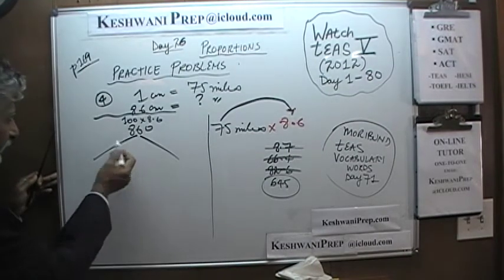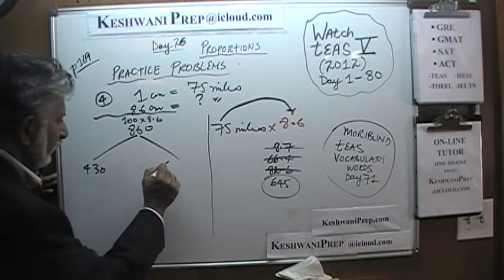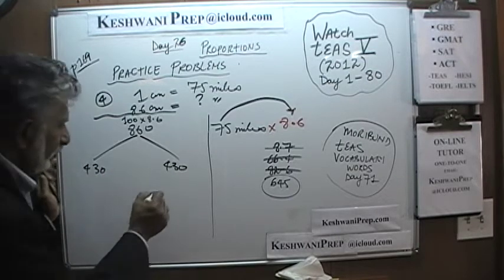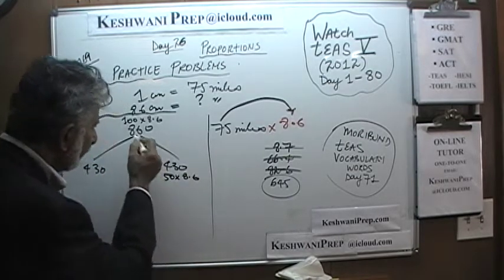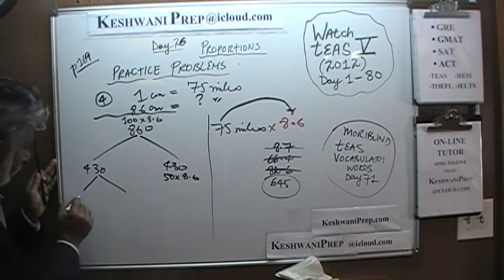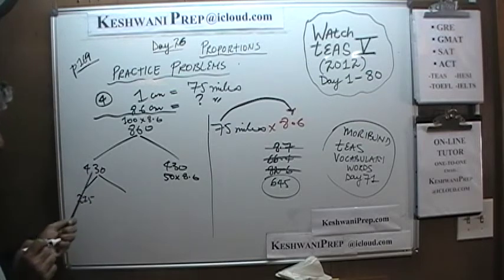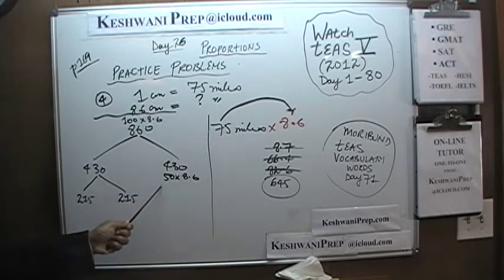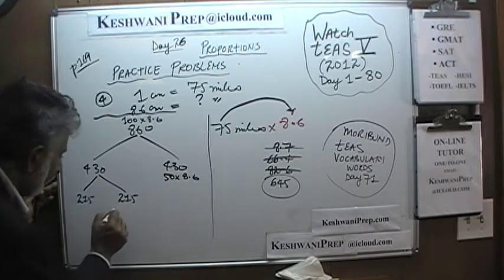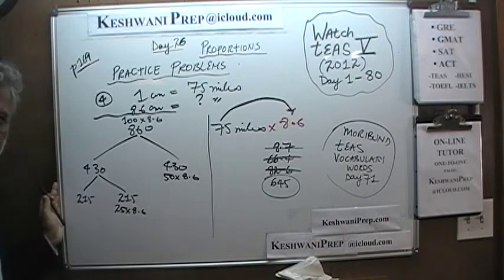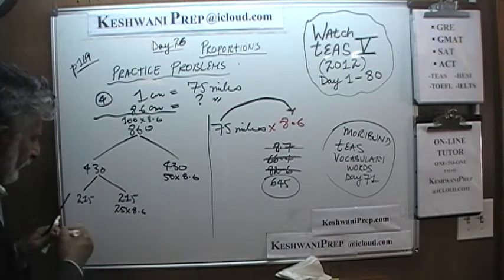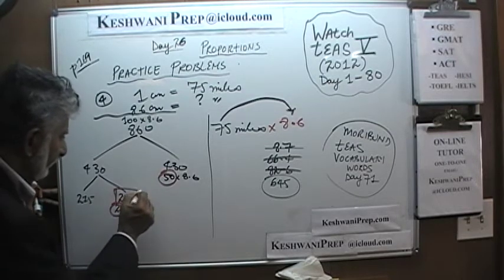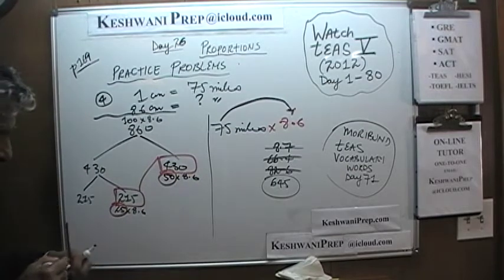If you take half of 860 — half of 800 is 400 and half of 60 is 30 — that gives you 430. If 860 represents 100 times 8.6, then 430 must represent 50 times 8.6 because it is half of it. Now if you take half of that again, half of 400 is 200 and half of 30 is 15, giving you 215. If 430 represents 50 times 8.6, then 215 must represent 25 times 8.6. We have our 25 times 8.6 and our 50 times 8.6, which means if we add these two numbers we should have 75 times 8.6.